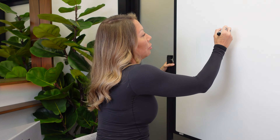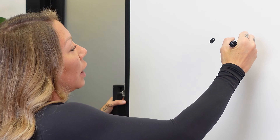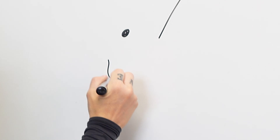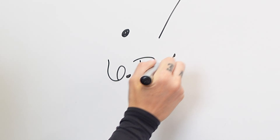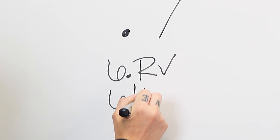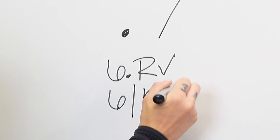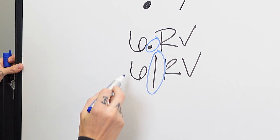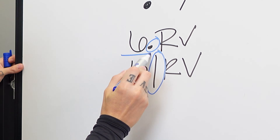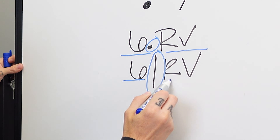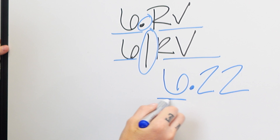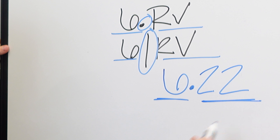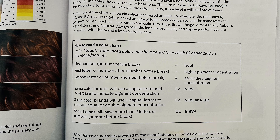Some hair color lines are going to have what's called a break, which can be a dot or a slash. So it would say 6.RV or 6/RV. All the break is doing is separating the level from the tone — for example, 6.22, where 6 is the level and 22 is the tone.